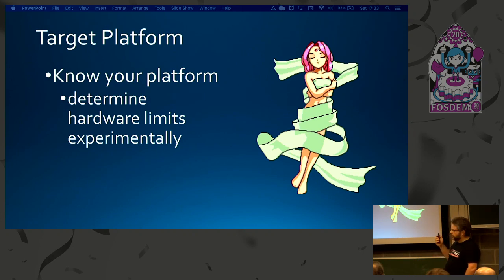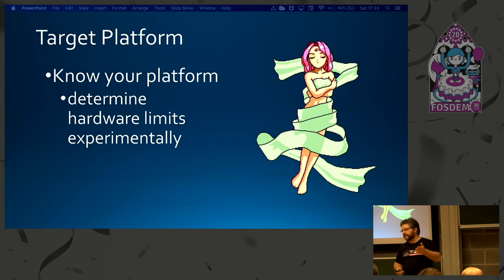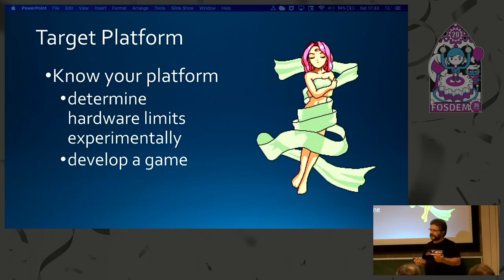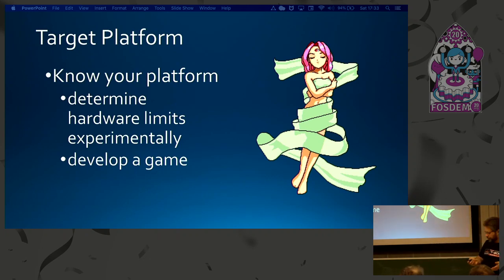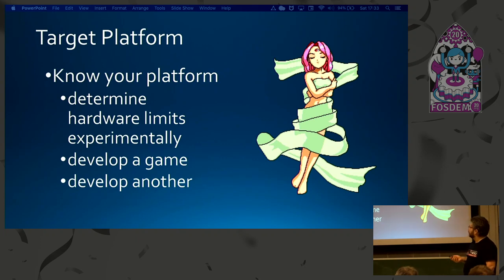Regarding the target platform, you really need to know your platform. This is not just about software — you need to know the architecture of the system, of the machine, because that plays a really important role in the conversion. You can throw away everything you already know about developing a game on a PC. You have to think differently and determine all the hardware limits experimentally. You should develop at least one game on the system to get the feel of what really hurts, and then develop another game — because you learn valuable lessons with the first one.